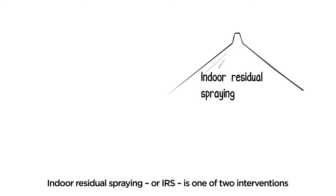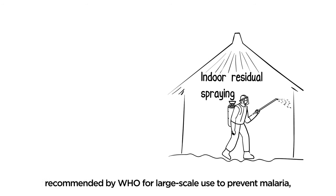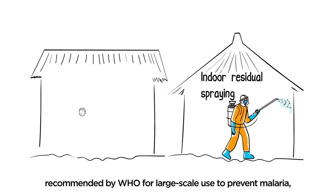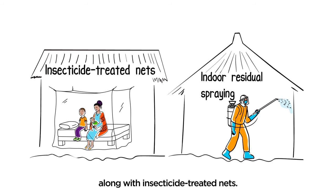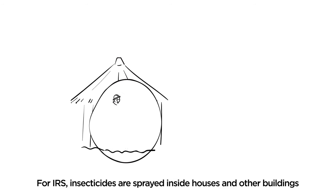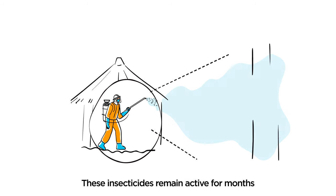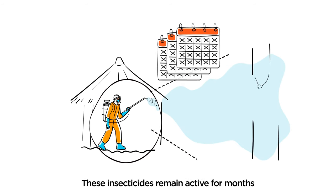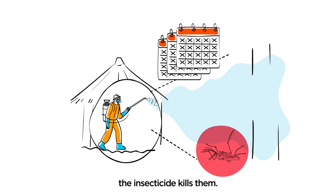Indoor Residual Spraying, or IRS, is one of two interventions recommended by WHO for large-scale use to prevent malaria, along with insecticide-treated nets. For IRS, insecticides are sprayed inside houses and other buildings where disease-transmitting insects are likely to rest. These insecticides remain active for months, and when certain insects like mosquitoes land on the sprayed surface, the insecticide kills them.